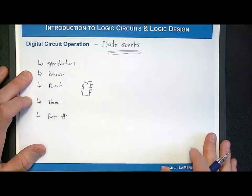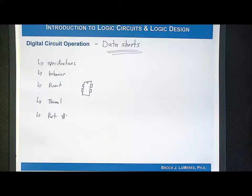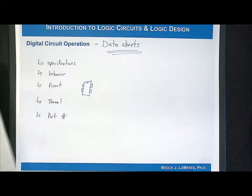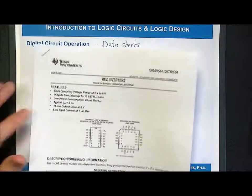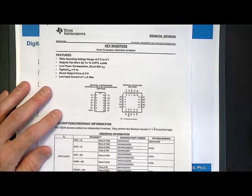It's also going to give you information about the part numbering scheme. A datasheet typically represents numerous different part numbers, each with different pinouts and thermal characteristics. It gives you information on how to order one. Let's take a look at a real datasheet and look at some of the key features. I'm going to look at a very common device, which is an inverter.